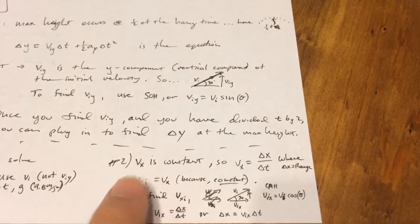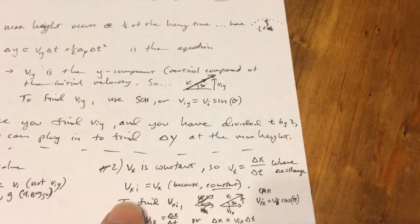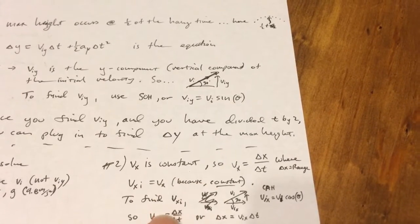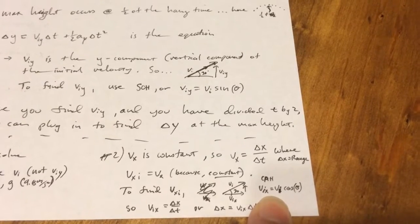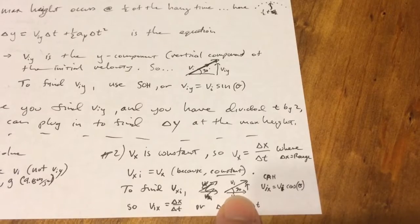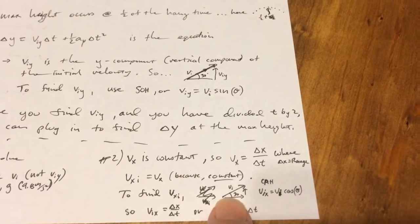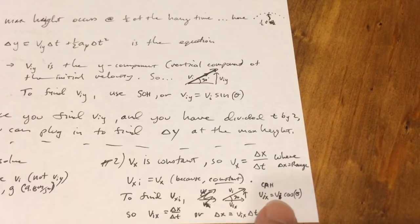The other way to do it is to think that vx is constant, which means that vx is the same as vix. I should have wrote vix right there because it's constant. So to find this, you can use this relationship: vix equals vi cosine theta. And again, this comes from this. The x portion is down here. This is adjacent to the angle, so we use cosine, and it's just the initial velocity times the cosine of the angle.